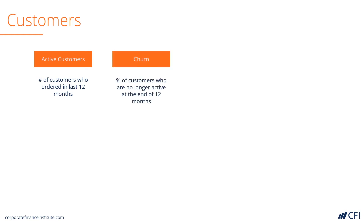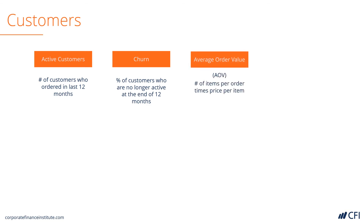The churn rate is the percentage of customers who are no longer active after the same period as you define your active customer base — in this case, the number of customers who have dropped off after 12 months. The average order value, sometimes also referred to as average order size, is the number of items per order times the price per item. This is the average checkout value.